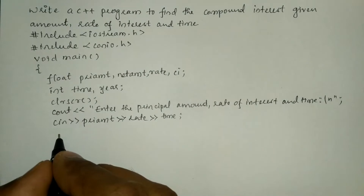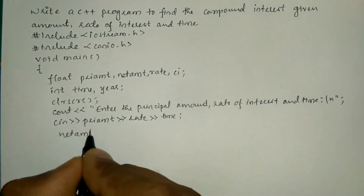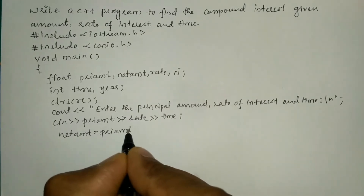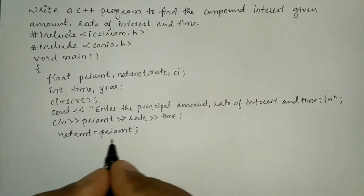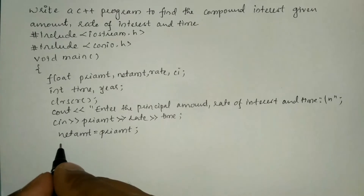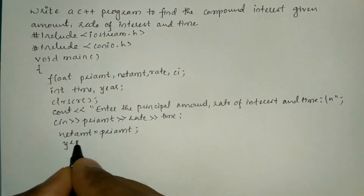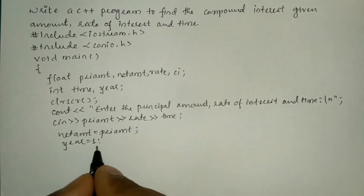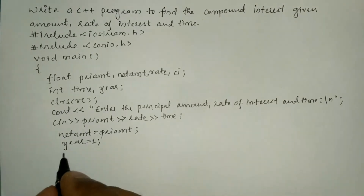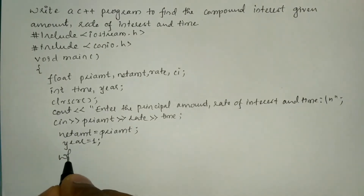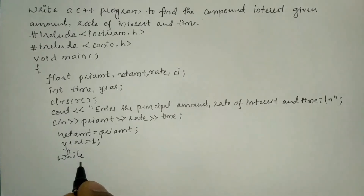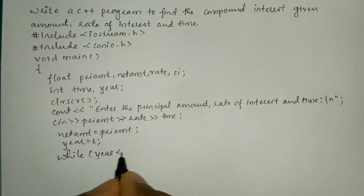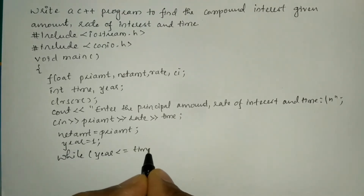Now I am going to initialize principal amount to net amount — so pri_amt is assigned to net_amount. Then year is initialized to 1. Now we are going to use the while looping construct. The while keyword must be written in lowercase. We check the condition: year is less than or equal to time.